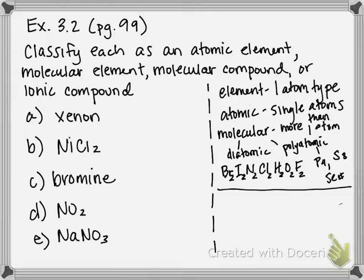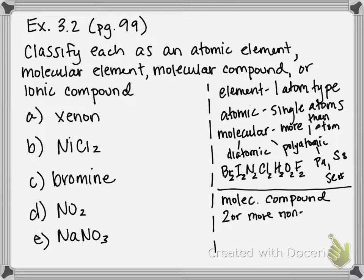So on the other side of our categorization is compounds, and compounds can either exist as molecular or ionic. So the way that you determine if something's a molecular compound or an ionic compound is by looking at what types of elements are present.